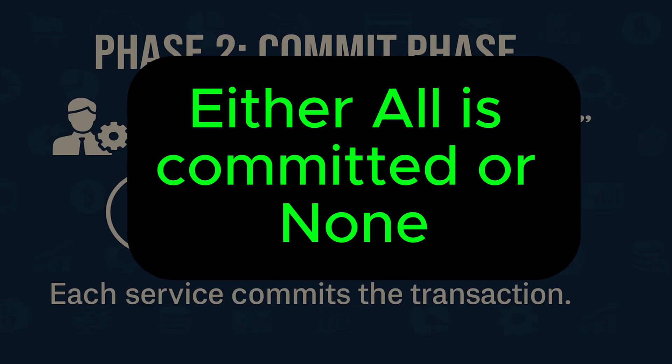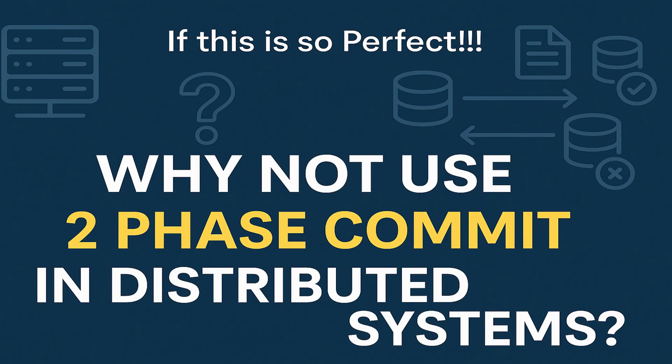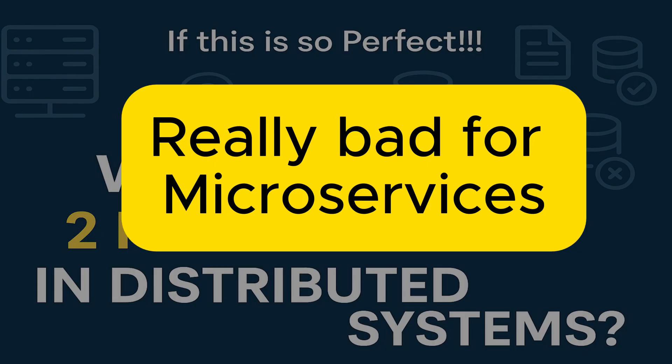This sounds perfect — with this we've achieved an atomic transaction in a distributed system. But if it's so perfect, why don't we use it everywhere? It's because two-phase commit comes with serious limitations for distributed systems like microservices. Let's briefly discuss those issues.